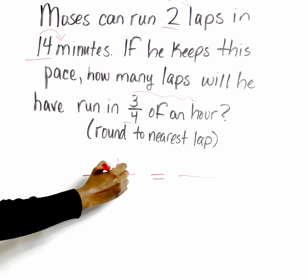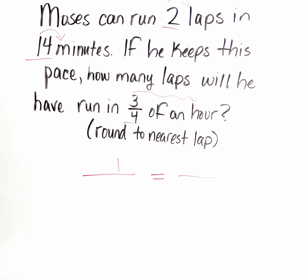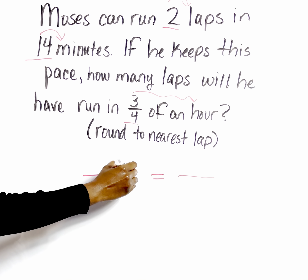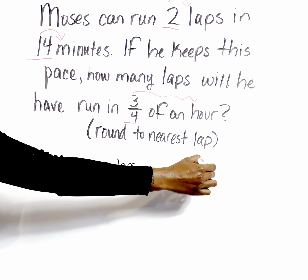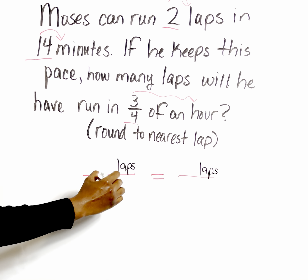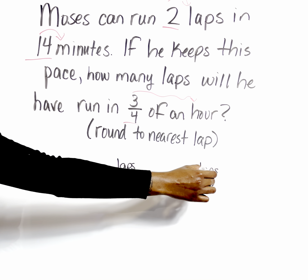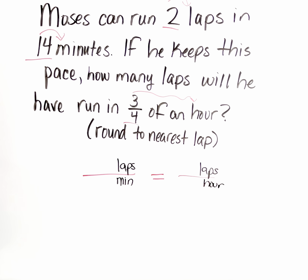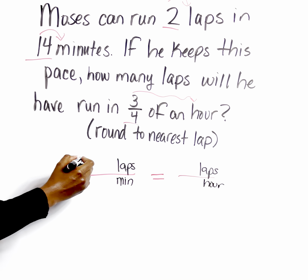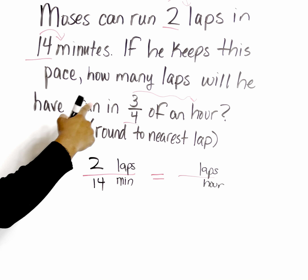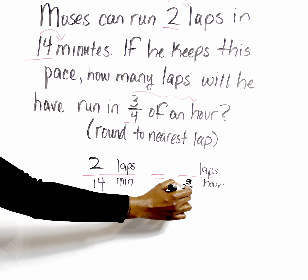So we have laps up top on the left, laps up top on the right. We have minutes here on the left bottom, and the difference is we have an hour on the right bottom. We're going to go ahead and fill in our values. So we have two laps, 14 minutes, and then we want to know how many laps and three-fourths of an hour.